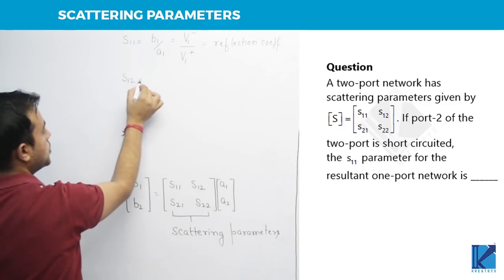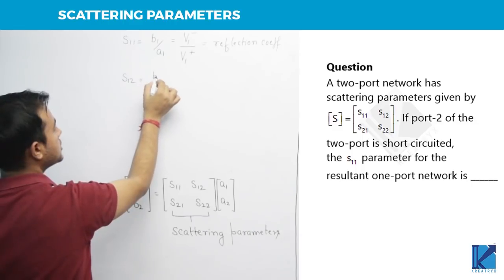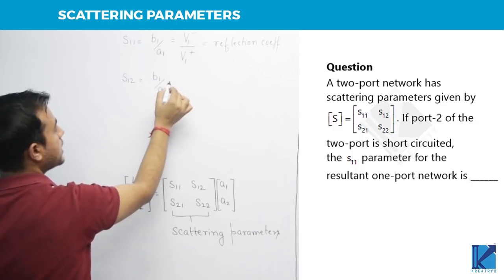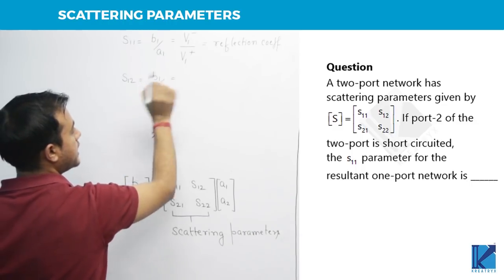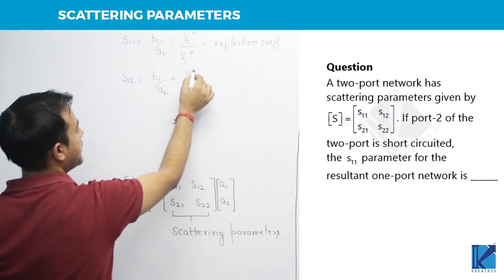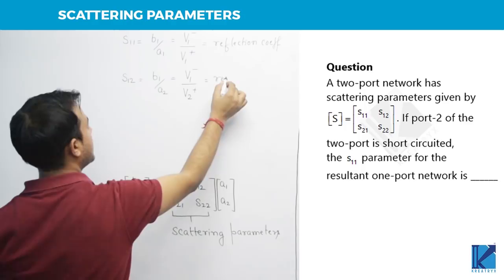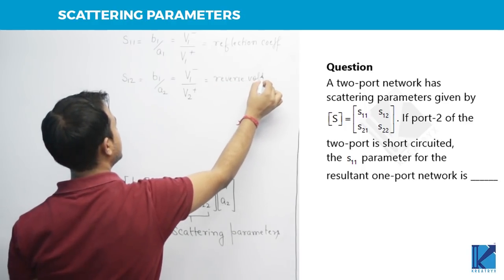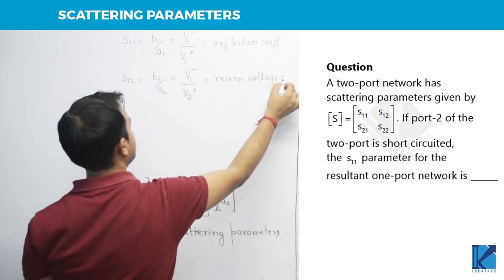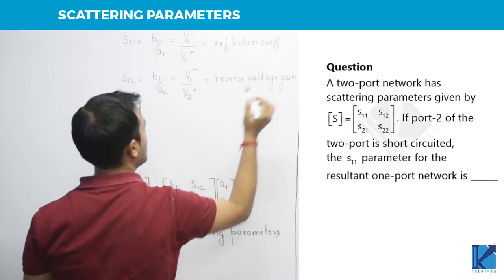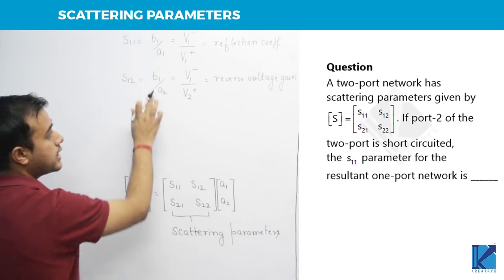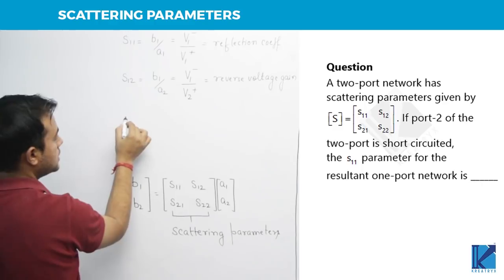Similarly, S12 will be how much? B1 by A2. A2 is the wave incident at port 2, B1 is reflected from port 1. So it is called as reverse voltage gain, because you are incidenting at the output port that is 2 and you are taking reflection from port number 1.